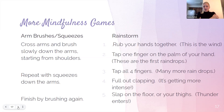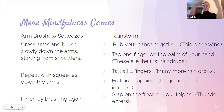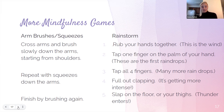A couple more activities: arm squeezes, tapping down the arm. And the rainstorm — I have the kids sit in a circle and go through the motions, changing one by one around the circle, then moving to the next action around the circle again. We end up spending a couple of minutes really focused on the person in front of us and on the sound of the rainstorm. Google a video — it's very easy to do in a classroom.